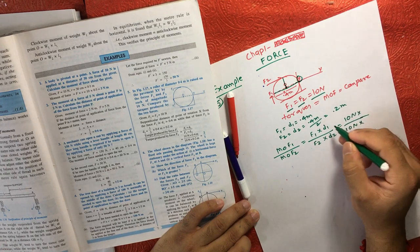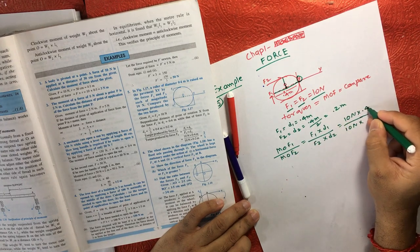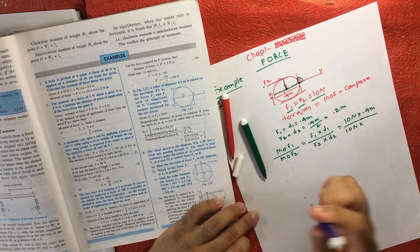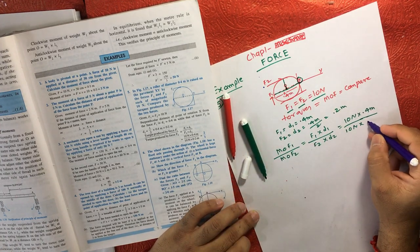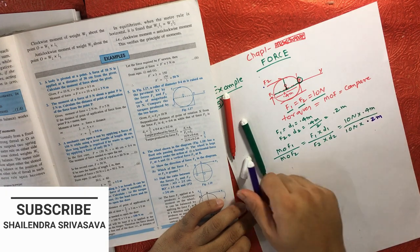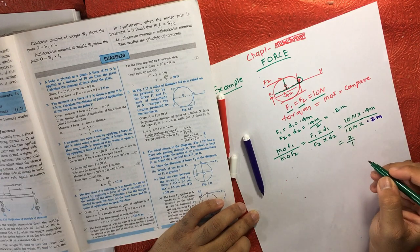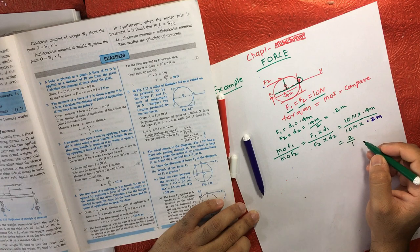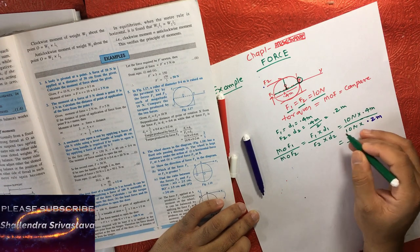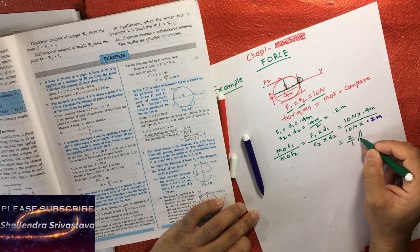But the distance in case of F1 is 0.4 meter, and in case of F2 is 0.2 meter. That's why this will become 2 by 1. So the comparison or the ratio of these two moments of force will be 2 by 1, and that is your answer.